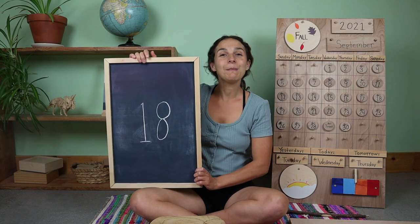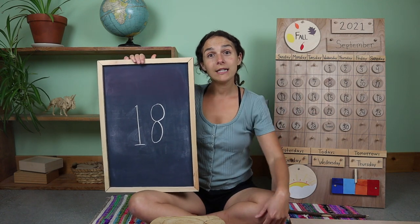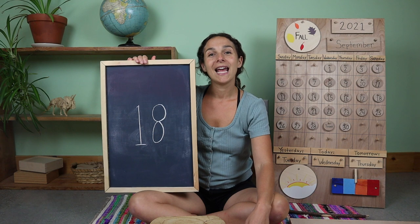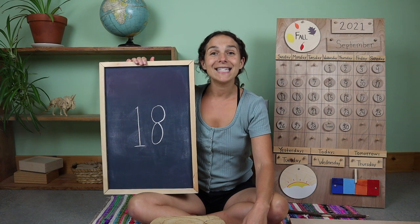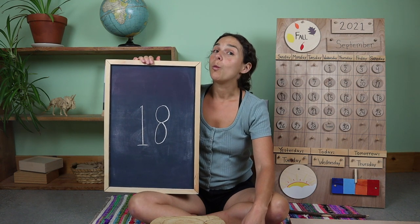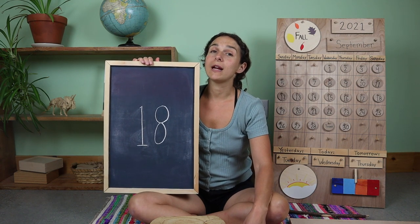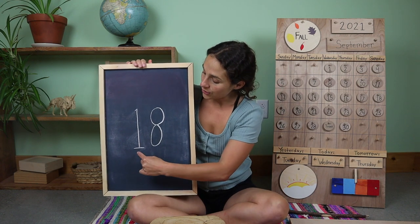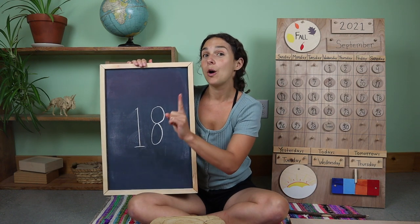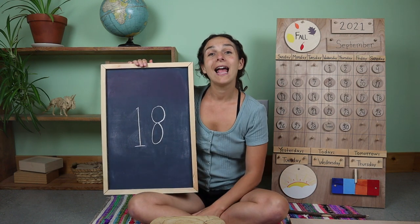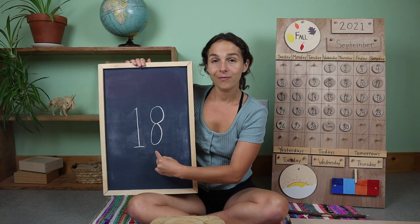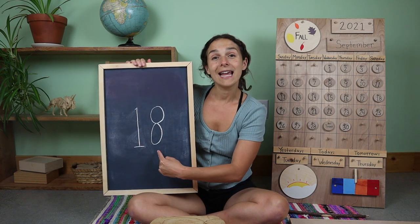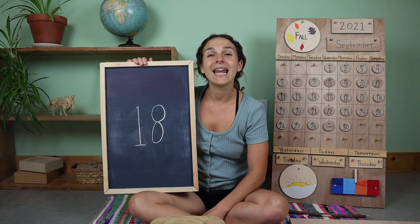And here's the number of the week. What double digit number is this? 18. That's right. When you write the number 18, you write two numbers. First you write the number one, and then you write the number eight. One, eight, 18.